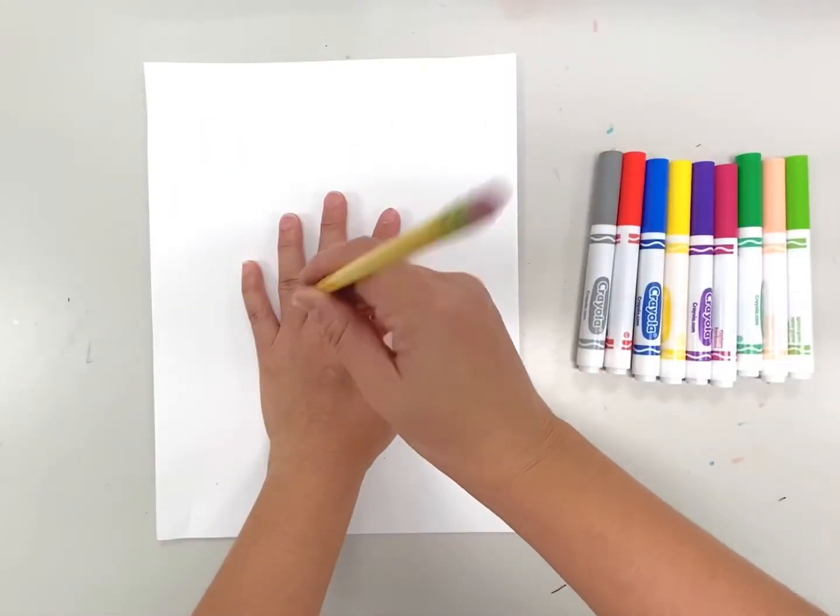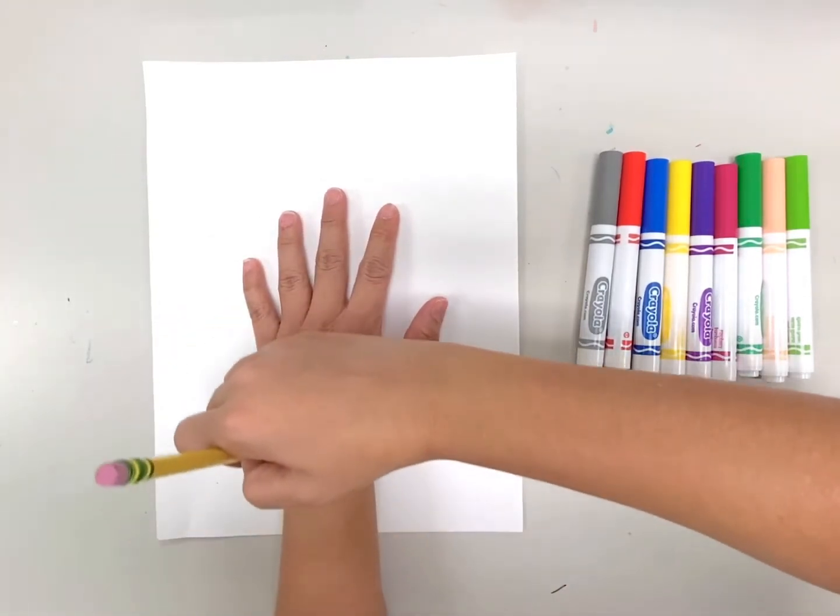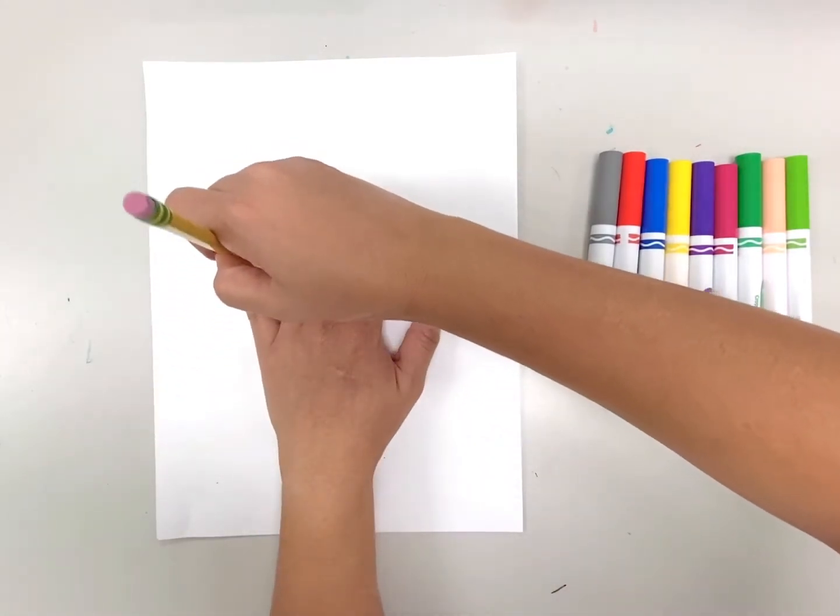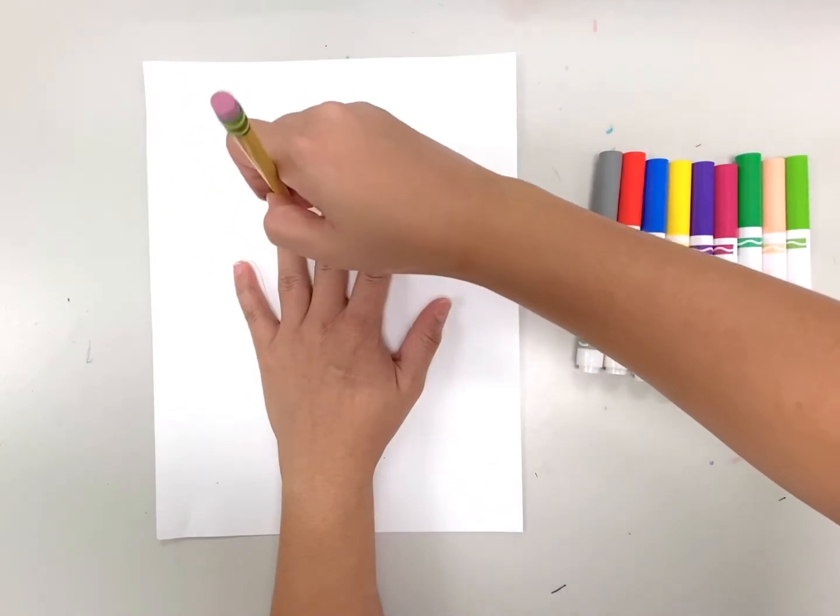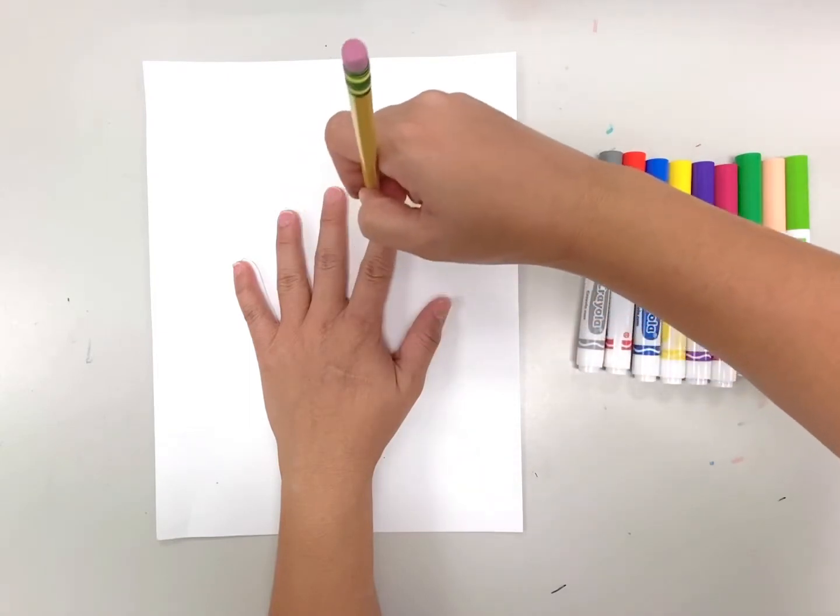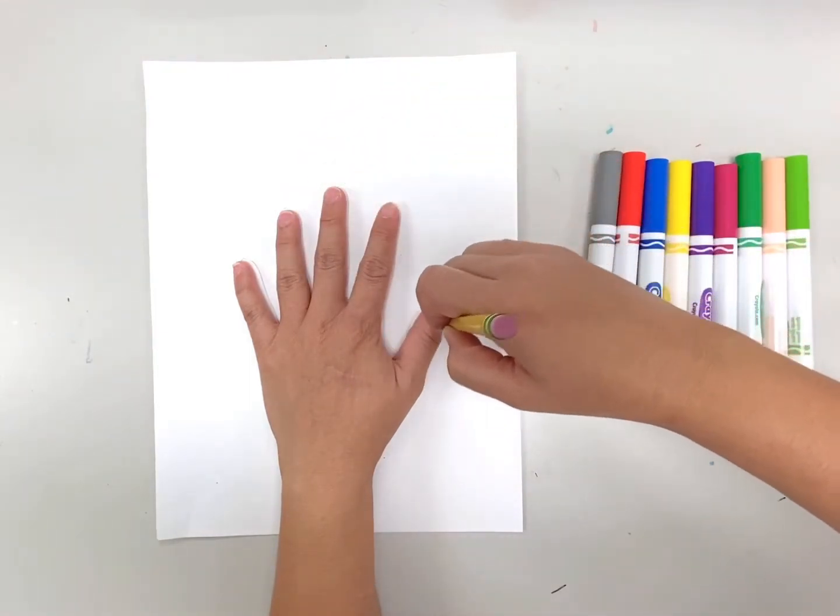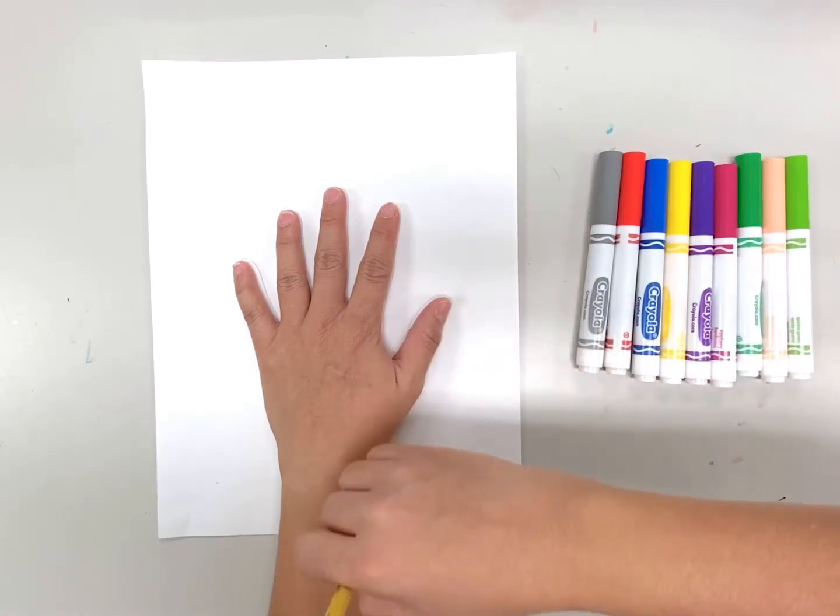Place your hand in the middle of your page with your fingers apart and grab your pencil. Remember when you're tracing your hand, try your very best to keep your pencil vertical and not tilted so your hand tracing comes out accurate. And always take as much time as you need.